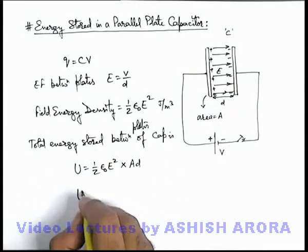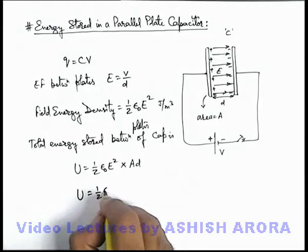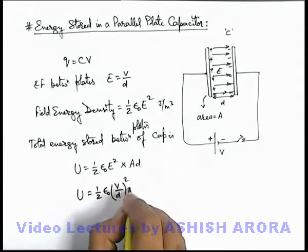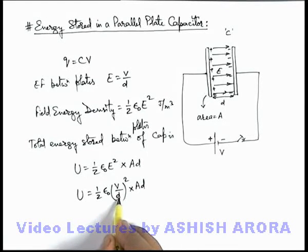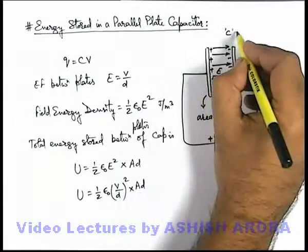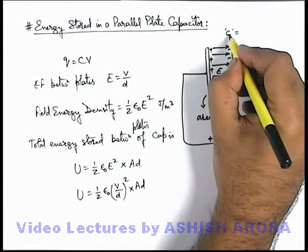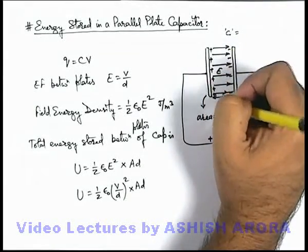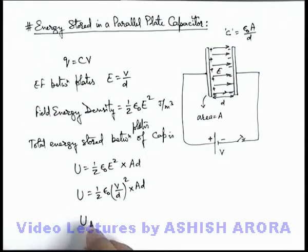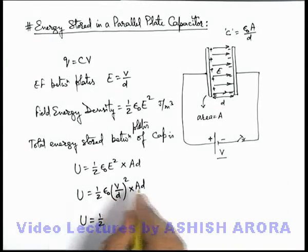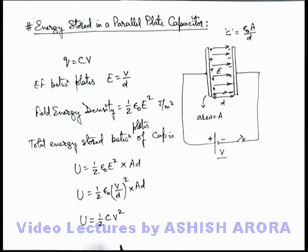Now if we substitute the value of electric field here, it is half epsilon not V by d squared multiplied by Ad. Here we can see one d gets cancelled out, and epsilon not A by d we can write as capacitance of capacitor. The value of capacitance is related to area and plate separation as epsilon not A by d. So here we can substitute the value of the total energy stored between the plates of this parallel plate capacitor when it is charged to a potential difference V is written as half, epsilon not A by d we can write as C, multiplied by V squared.